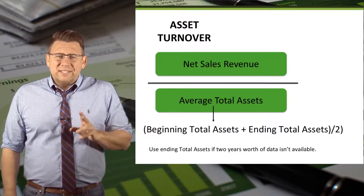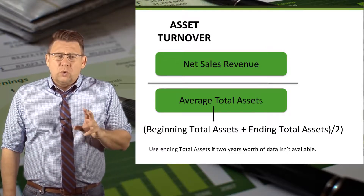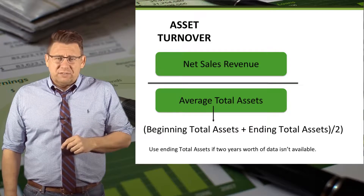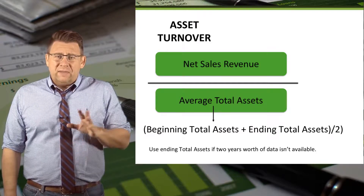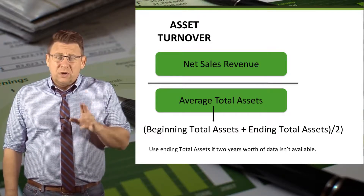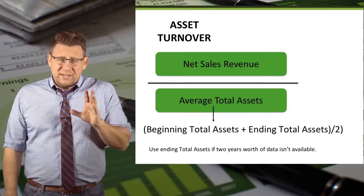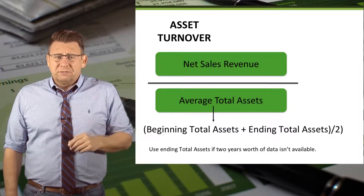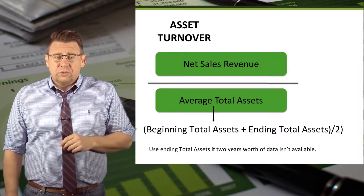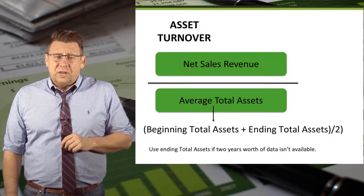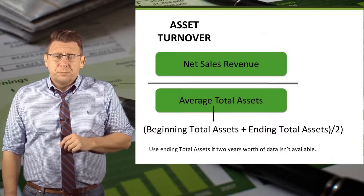Sometimes you might see a question where only ending total assets are given. In that case, just use that number, but realize that in the real world you would be able to find two years worth of data. This is another ratio where the higher the number, the better.